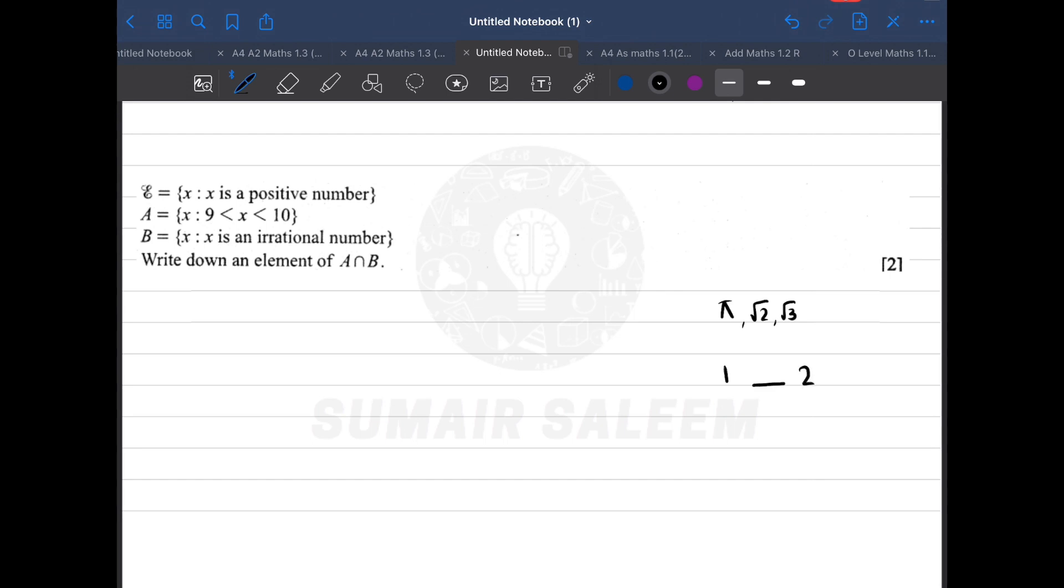There's one very common question that has come in past papers: find an irrational number between 1 and 2. If I say it's 1.5, no—irrational numbers cannot ever be converted to fractions, and 1.5 means 1 whole 5/10, that's a fraction. So how will you get an irrational number between 1 and 2? What's √1? It's 1. What's √4? It's 2. So in the middle it's going to be √2 or √3.